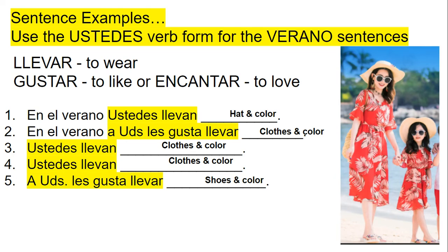The last set is in the ustedes form — that's 'y'all.' So ustedes llevan, and then you talk about the hat and the color. A ustedes les gusta llevar — 'y'all like to wear' — and then you talk about whatever articles of clothing you see. We have three sentences to talk about their clothes: she has a dress, a necklace, a bag, sunglasses. I mentioned she's not wearing socks — you could even talk about that. That was in your examples on your paper. And the last sentence is about the sandals they're wearing on their feet.